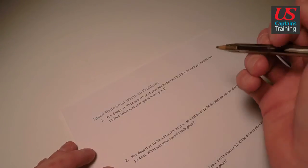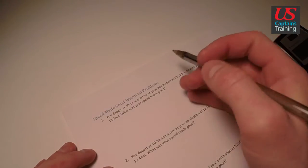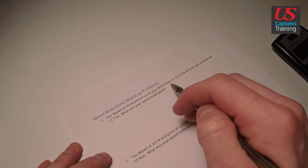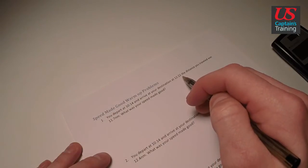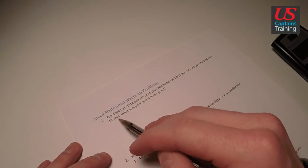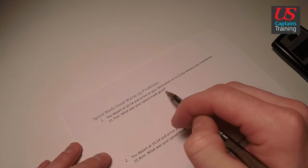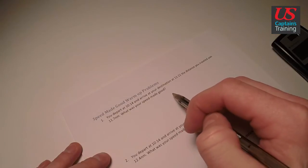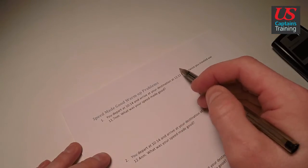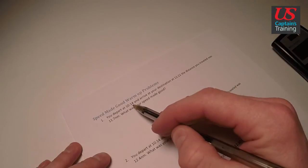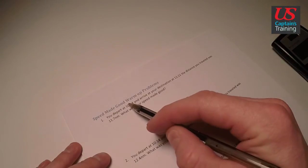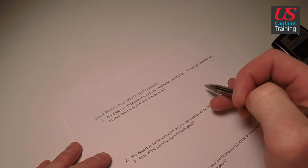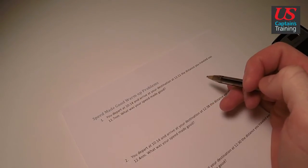These are speed made good warm-up problems. The first one reads, you depart at 1014 and arrive at your destination at 1222. The distance you traveled was 11.7. What was your speed? So to find speed, speed is equal to distance over time. We can take the end time minus the start time and get the change in time in hours and minutes. Then we have to make sure it's in all hours and we can put it in our distance speed time formula.